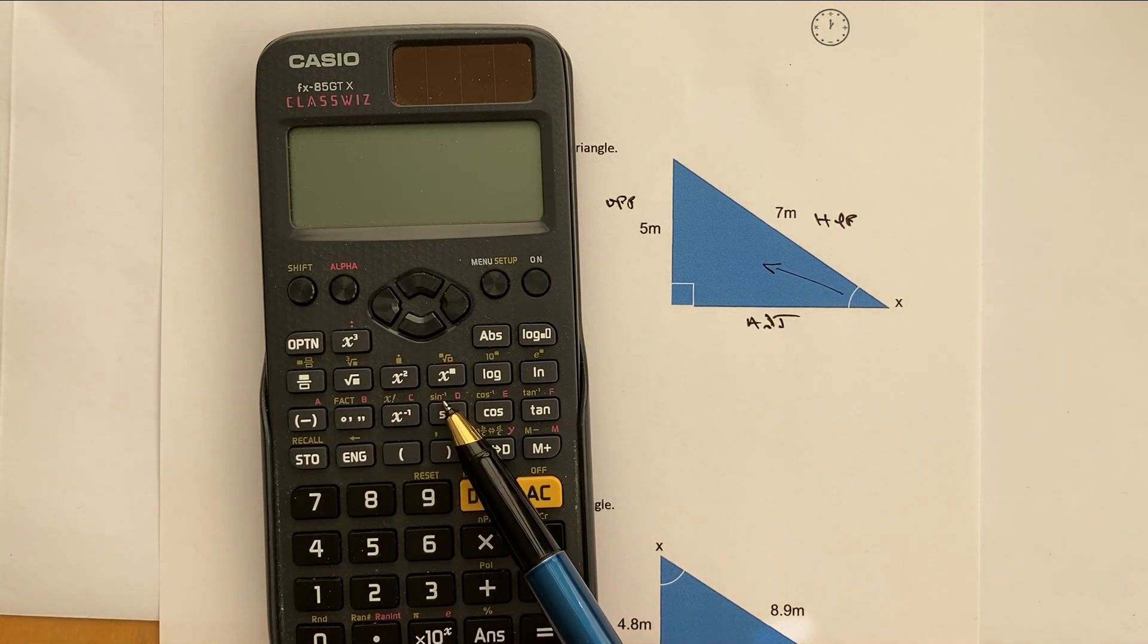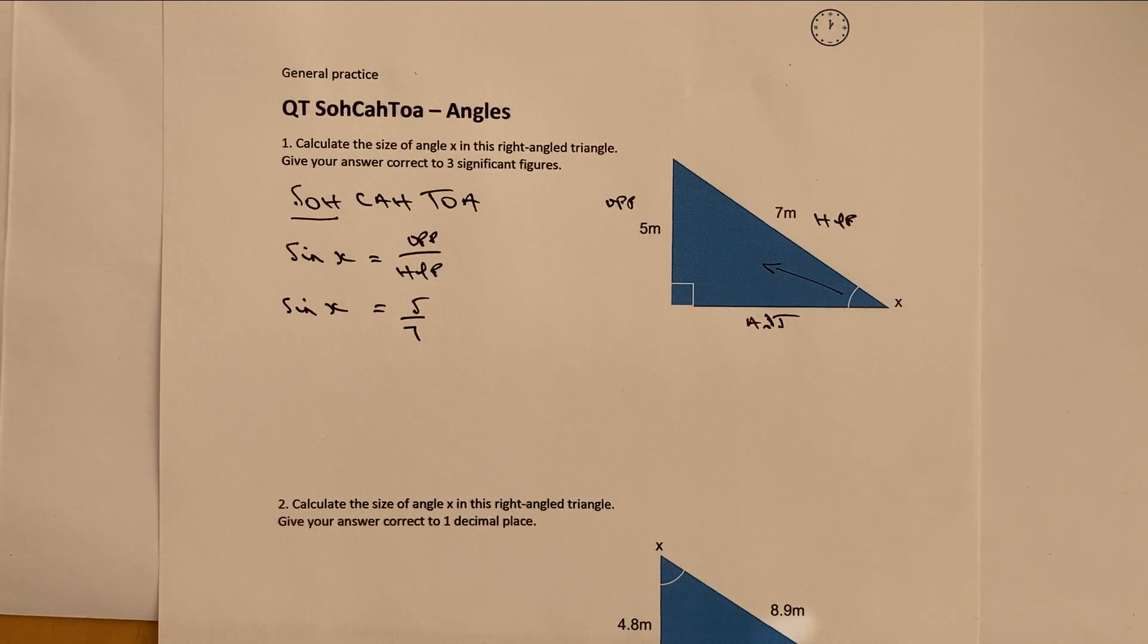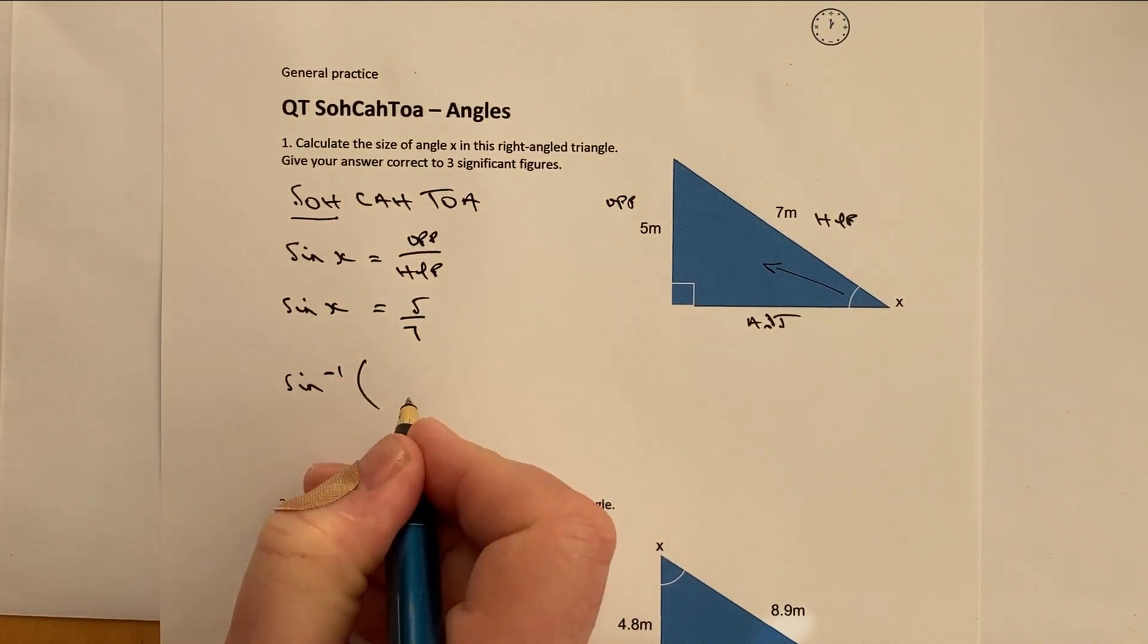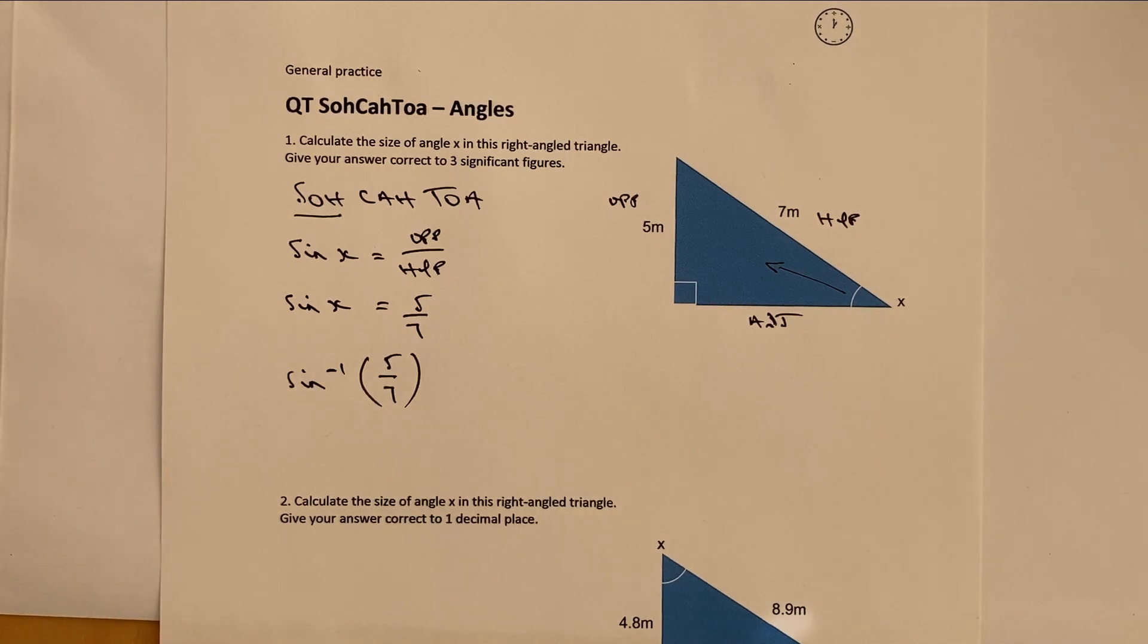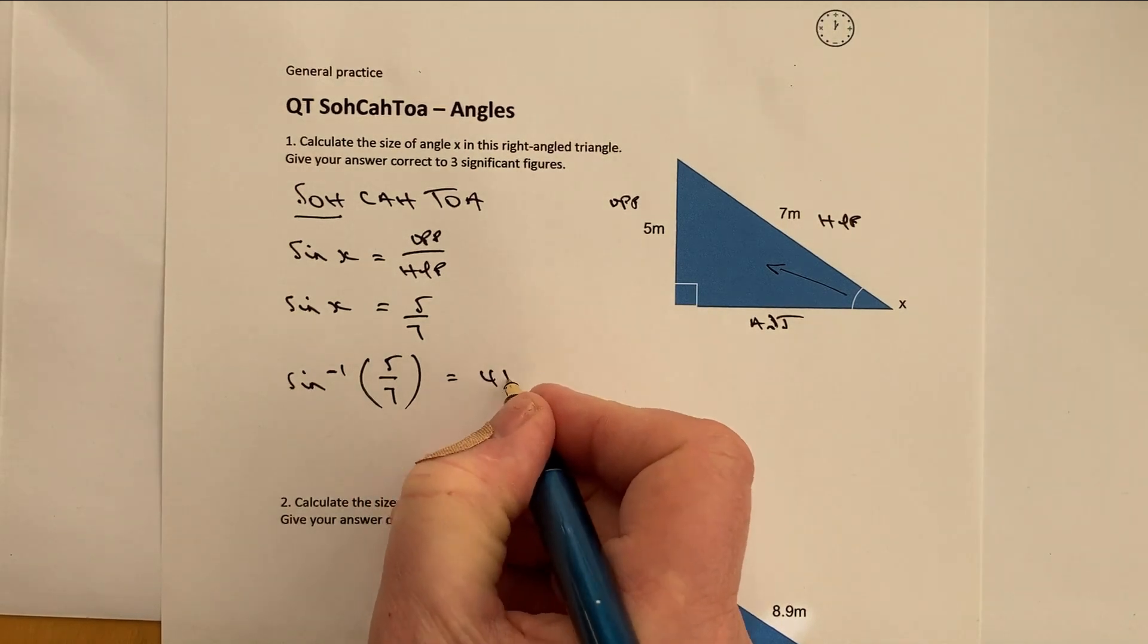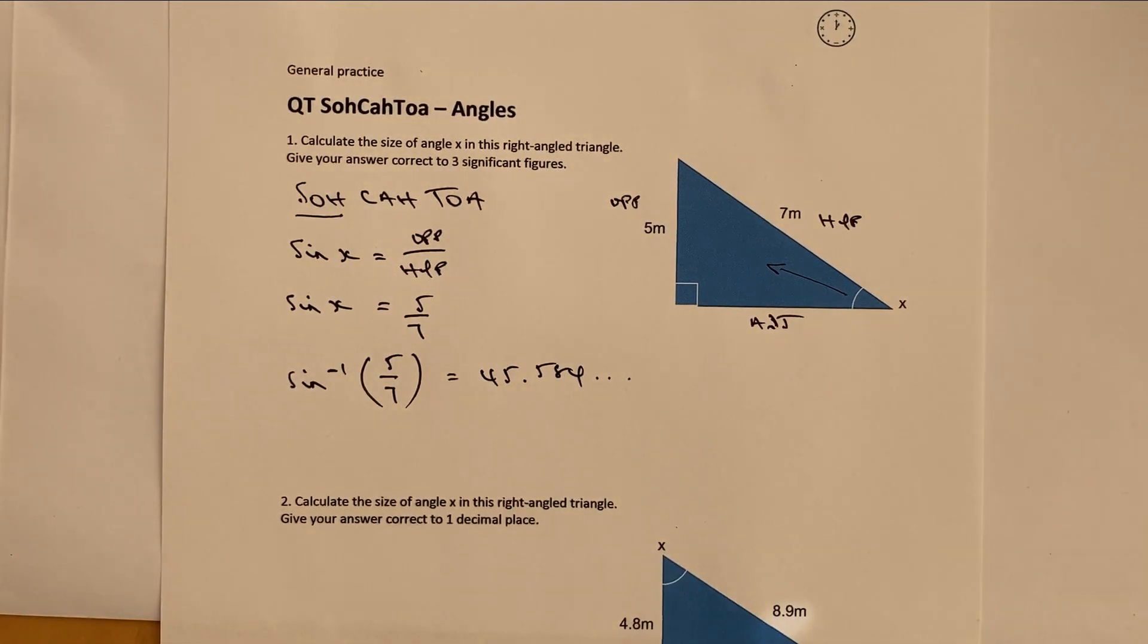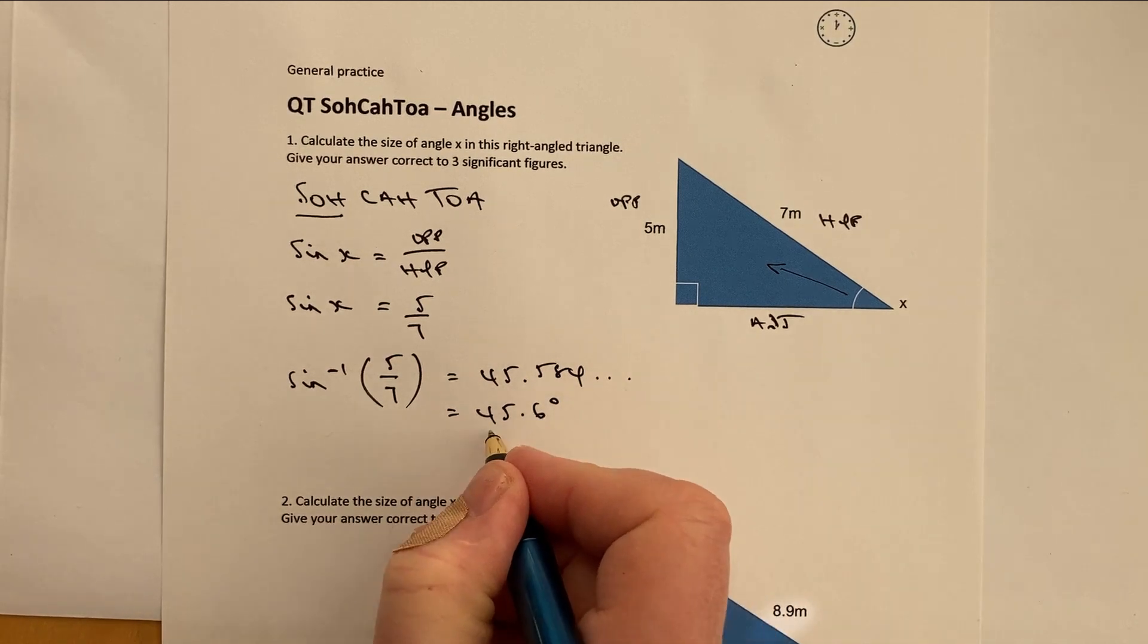So shift and sine will give me this particular ratio, which is the bit that I'm looking for. And it's called inverse trigonometry. If I use sine to the power of minus 1, and then I'm going to put in the fraction, making sure that you use the final bracket there to finish it off. And when I press the equal sign, what I'm going to get is 45.584, and then a few numbers afterwards. The answer is being asked to give correct to three significant figures. So to three significant figures, that would be 45.6 degrees.